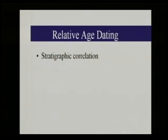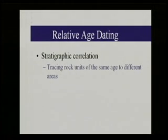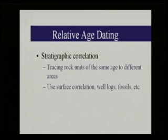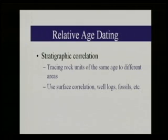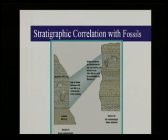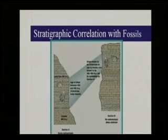We use relative age dating methods for stratigraphic correlation — tracing rock units of the same age across different areas. We can do this with surface correlation if rocks are exposed, or we can take logs from wells and cores showing different rock layers below the subsurface. Microfossils are especially useful when looking at subsurface cores. Basically we use fossils and rock types to correlate rock units of similar age across the landscape.